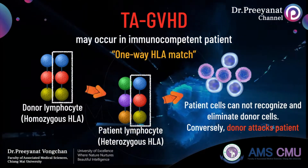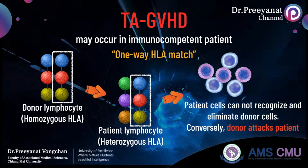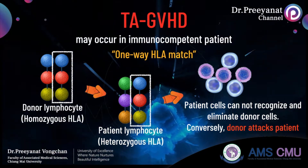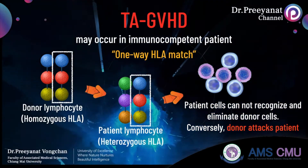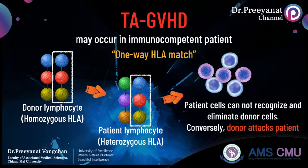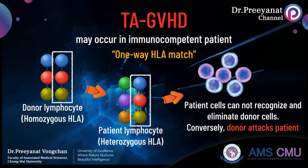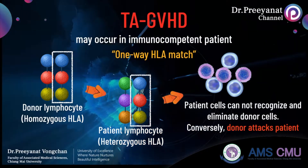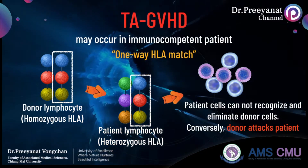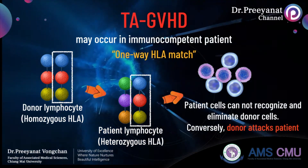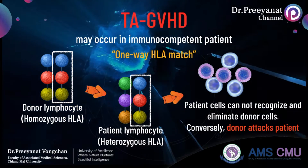The risk is associated with transfusion of blood components from closely related donors. An incidence rate of 1 in 660 transfusions is reported in Japan, and the use of fresh whole blood from related donors is thought to be a primary reason.